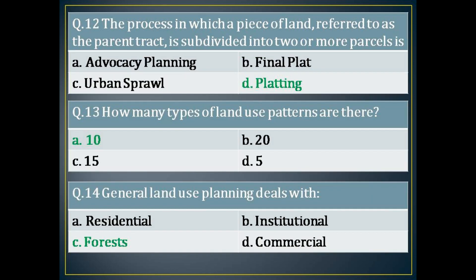The twelfth question: the process in which a piece of land, referred to as the parent tract, is subdivided into two or more parcels is? The answer is: platting. The thirteenth question: how many types of land use patterns are there? The answer is: ten. The fourteenth question: general land use planning deals with? The answer is: forests.